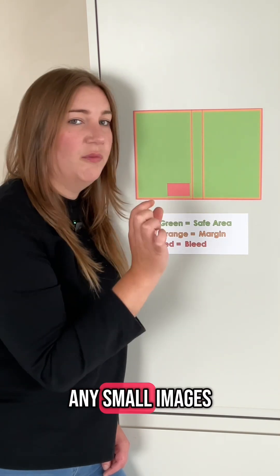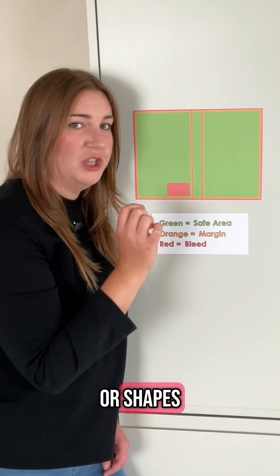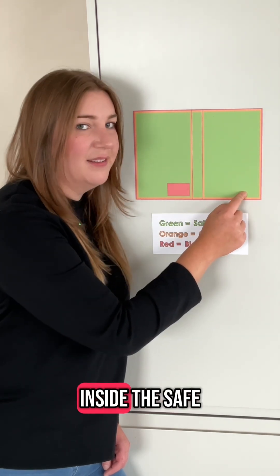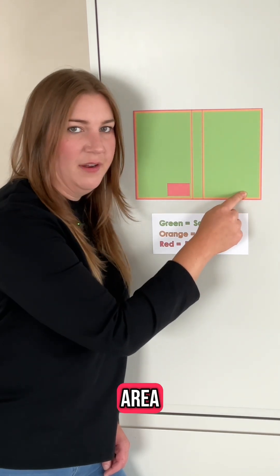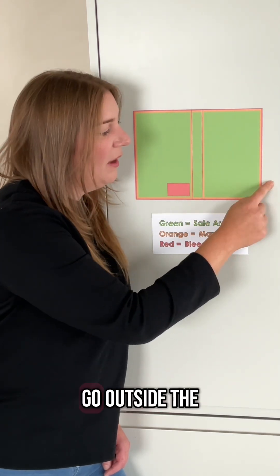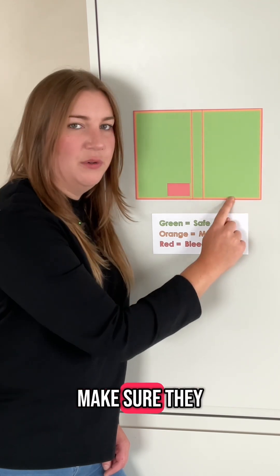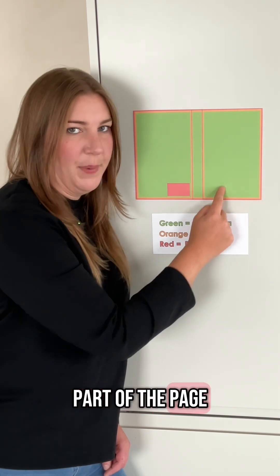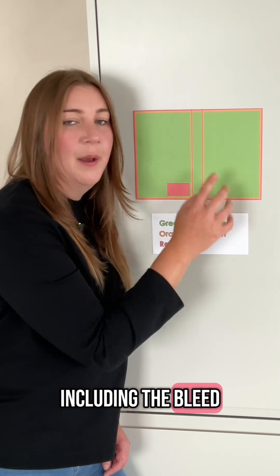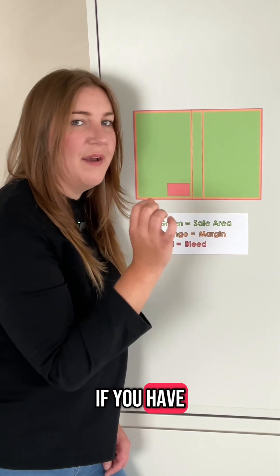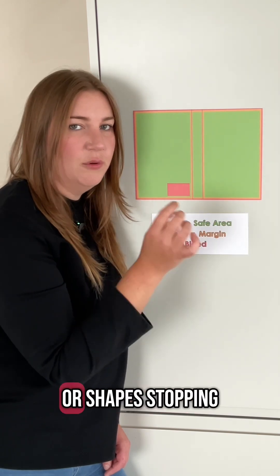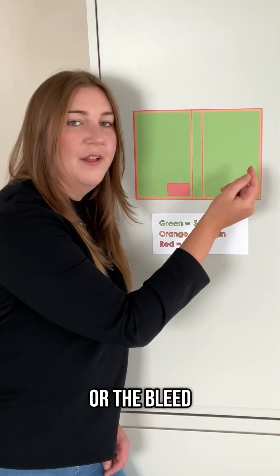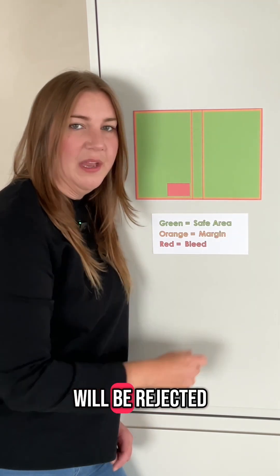Finally, if you have any small images or shapes, you either need to make sure they stay completely inside the safe area. But if they go outside the safe area, you need to make sure they fill that entire part of the page, including the bleed. Because if you have any small images or shapes stopping inside the margin or the bleed, then your book will be rejected.